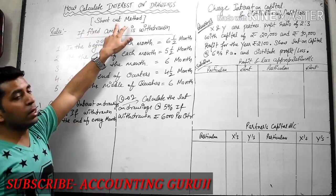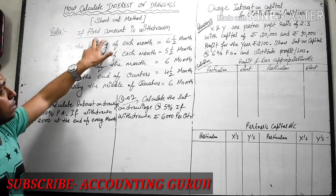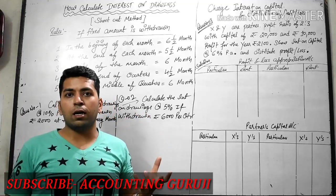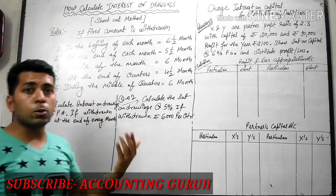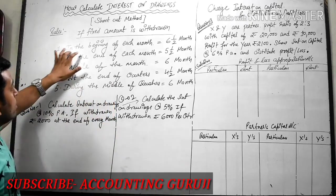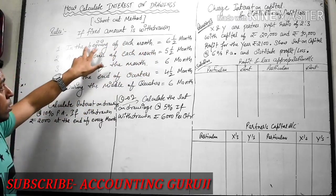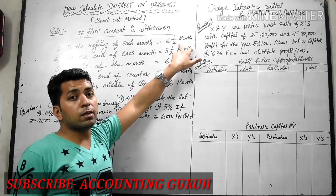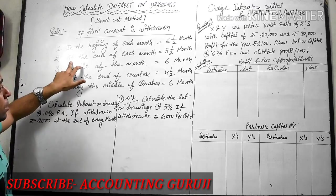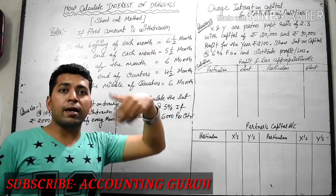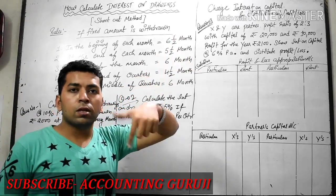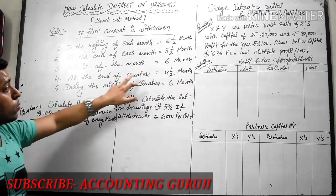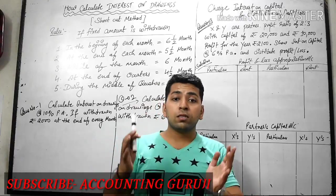Interest on drawing and interest on capital, how to calculate. Let's start guys. First, this is a shortcut method. You must see the rules. If fixed amount is withdrawn, if you have a partner withdrawing a fixed amount each month, quarterly, or annually. If you withdraw at the beginning of each month, and at the end of the year, if a partner withdraws per month, it will give interest in half months. If a partner withdraws at the end of the quarter, it means 3 months.